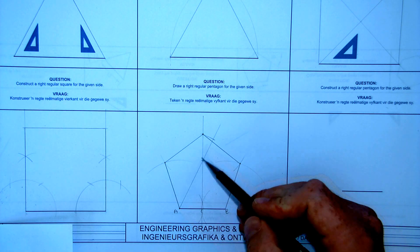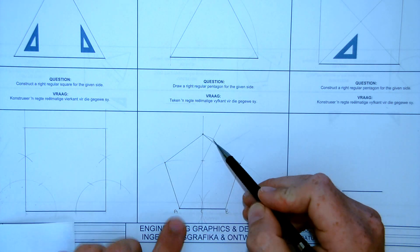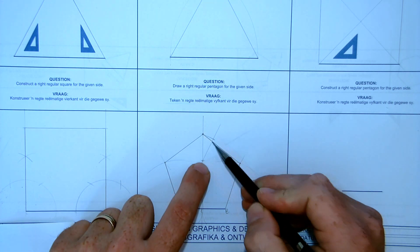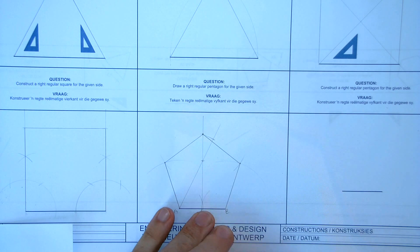Some students tend to use, when you drag this line across, tend to use this point and bring it across so the pentagon looks a lot flatter. Alright.